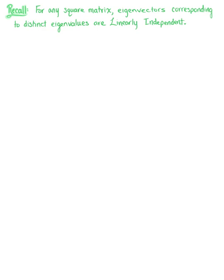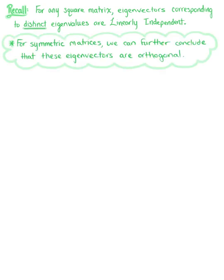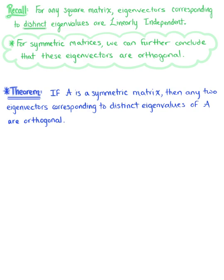Let's recall that for any square matrix, the eigenvectors corresponding to distinct eigenvalues are linearly independent. Now for symmetric matrices, we can further conclude that these eigenvectors are in fact orthogonal as well. This brings us to our next theorem: if A is a symmetric matrix, then any two eigenvectors corresponding to distinct eigenvalues of matrix A are orthogonal.